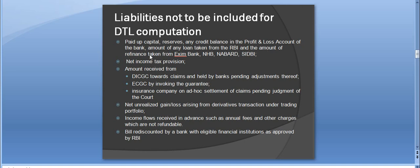Items excluded from DTL computation also include the amount of refinance taken from Exim Bank, NHB, NABARD, and SEBI; net income tax provision; amount received from DICGC towards claims held by banks pending adjustments thereof; amount received from ECGC by invoking the guarantees; and amounts received from insurance companies on ad hoc settlement of claims pending adjustment of the court.